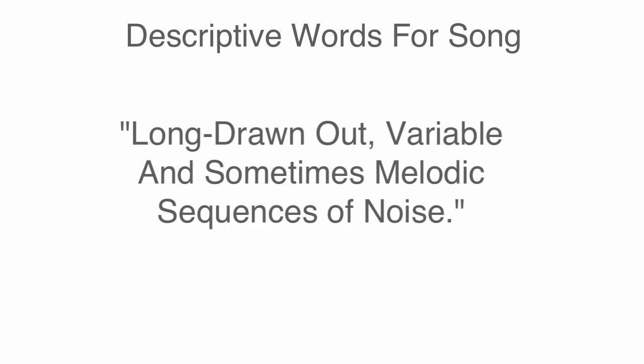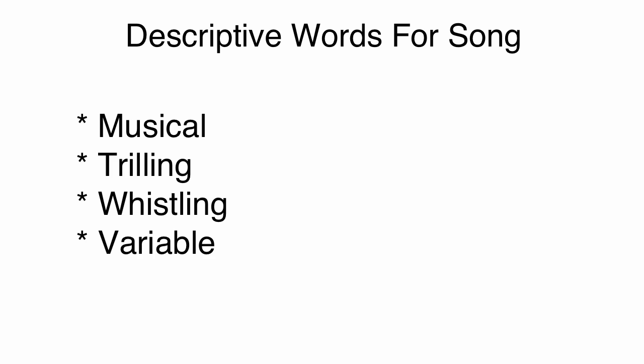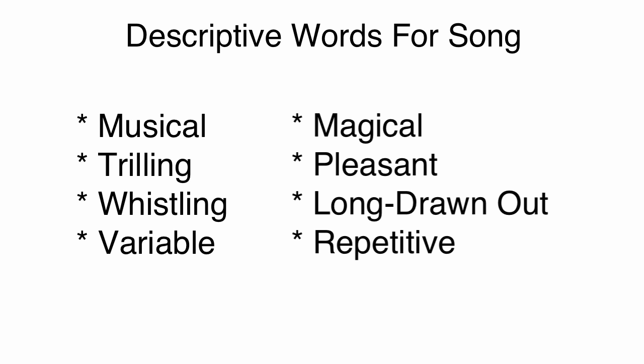One of the defining characteristics of songs made by birds is that they are long, drawn-out, variable, and sometimes melodic sequences of noise. If we were to make a list of descriptive words for songs, we might say: musical, trilling, whistling, variable, magical, pleasant, long, drawn-out, repetitive. Anytime you hear a bird making a series of sounds like what we just played, that's a song. You can identify that sound as being song even if you don't know what kind of bird is making it — you could be visiting some far-off distant landscape with totally unfamiliar birds and you would still know that it's a song.